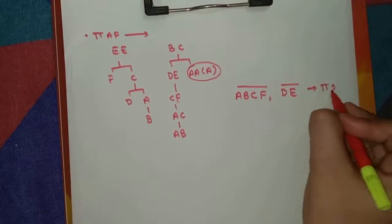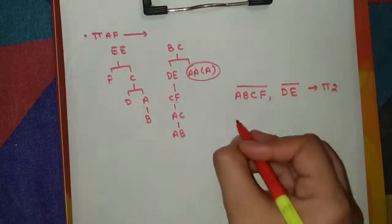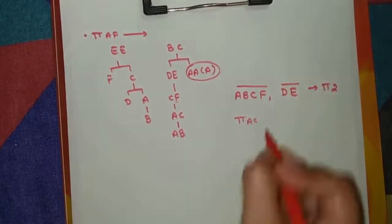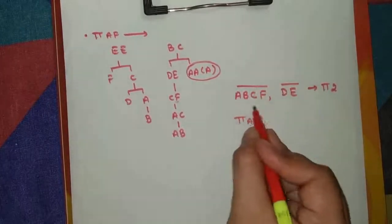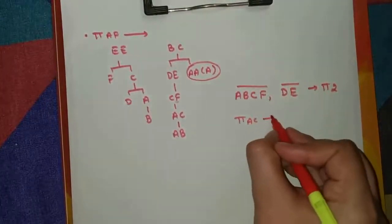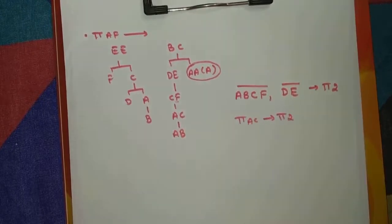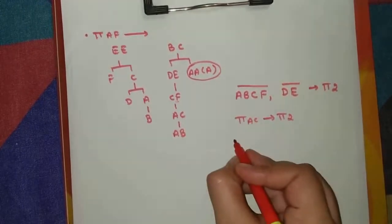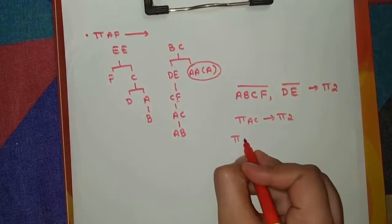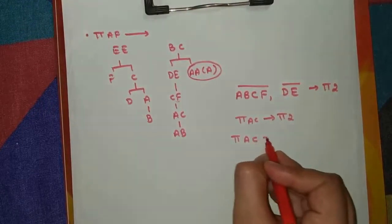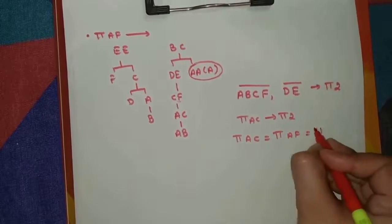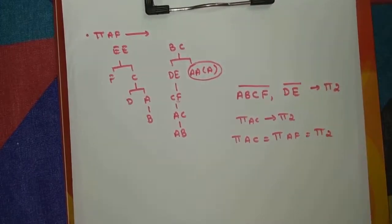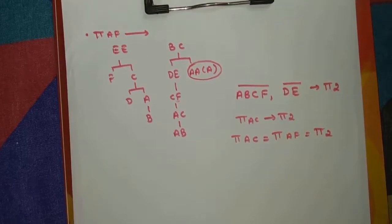Check pi(AC) that we already calculated — it equals the same partitions. So we can say pi(AC) = pi(AF) = pi_2, which is {ABCF | DE}. Like this we have to go on calculating for all combinations.